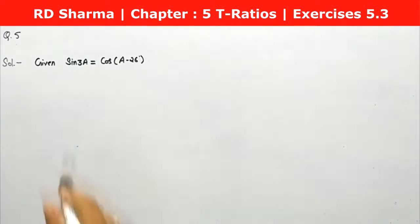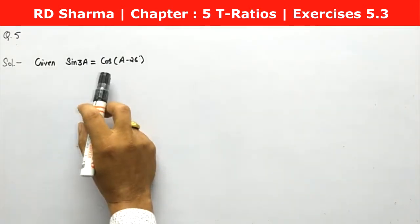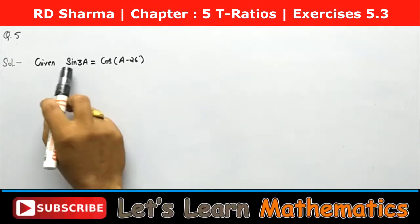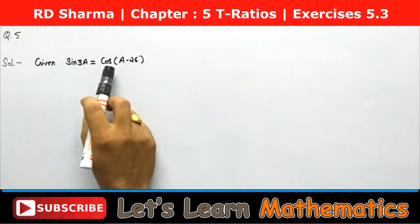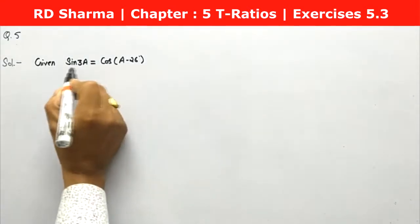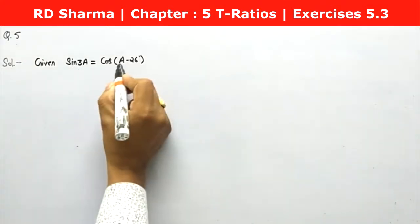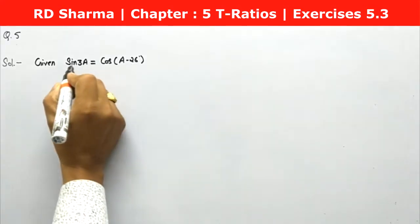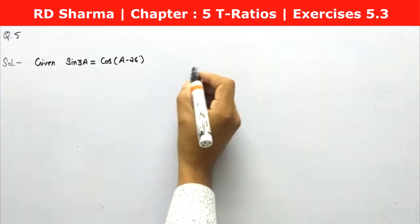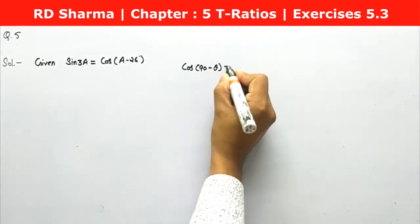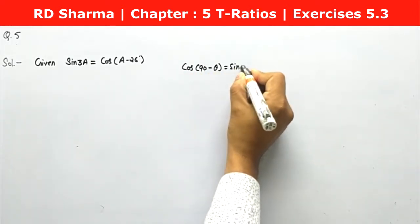On the left-hand side we have a sine function, and on the right-hand side we have a cosine function. We need to convert them so both sides use the same function — either both sine or both cosine. We'll convert sine to cosine, which is comfortable here because we have a minus calculation. We know the formula: cos of (90 minus theta) equals sine theta.